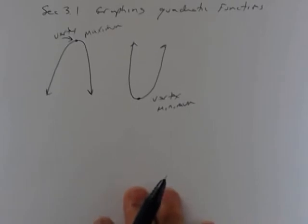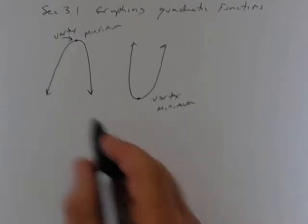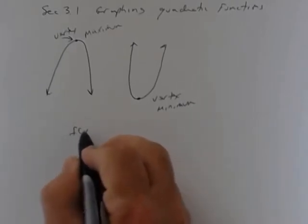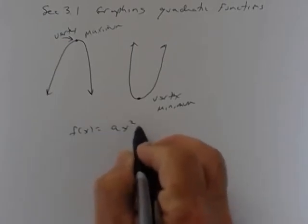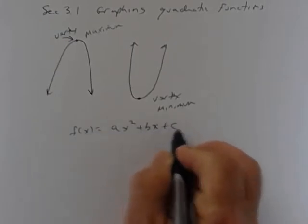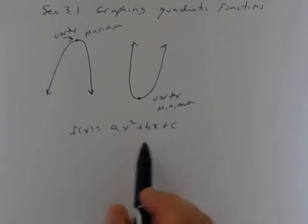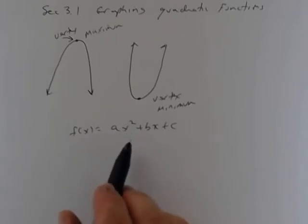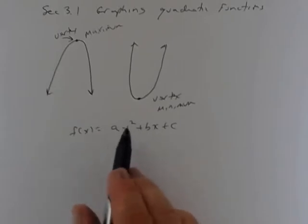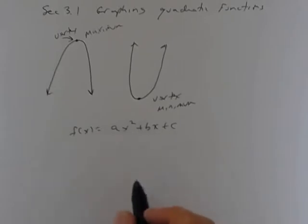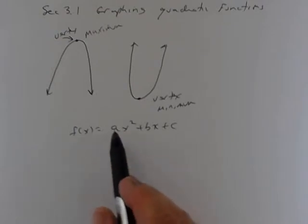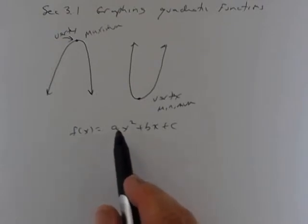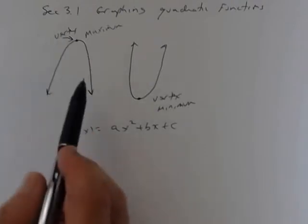A quadratic function has this form: f of x equals ax squared plus bx plus c. Most of what you did last semester in terms of factoring quadratics looked like this — you had an x squared, an x, and a constant. Now, the coefficient of x squared tells you whether the graph is going to open down or open up.